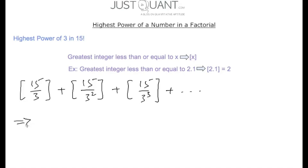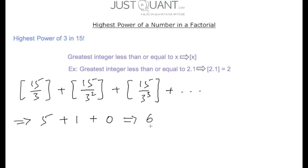The greatest integer less than or equal to 15/3 is 5. The greatest integer less than or equal to 15/9 is 1. The greatest integer less than or equal to 15/27 is 0, since 15/27 gives a value between 0 and 1. Hence, ignoring higher power terms, we have 5 + 1 = 6, and this 6 represents the highest power of 3 in 15 factorial.